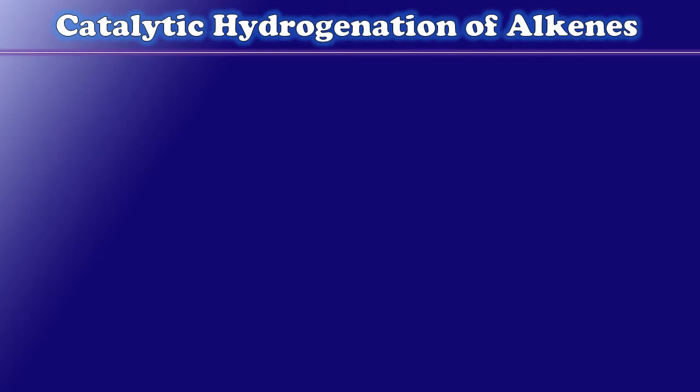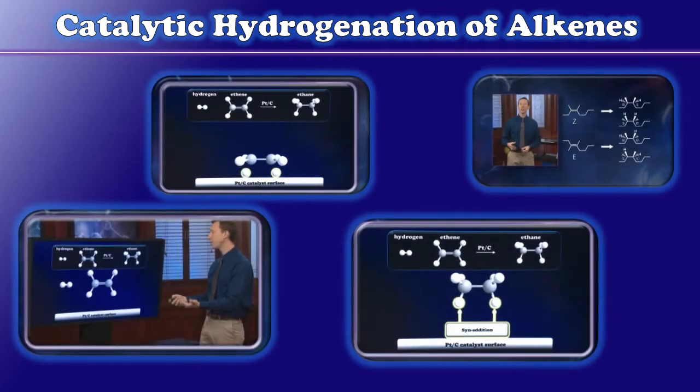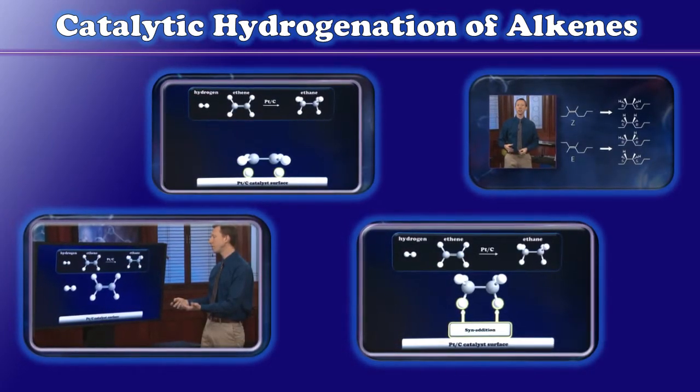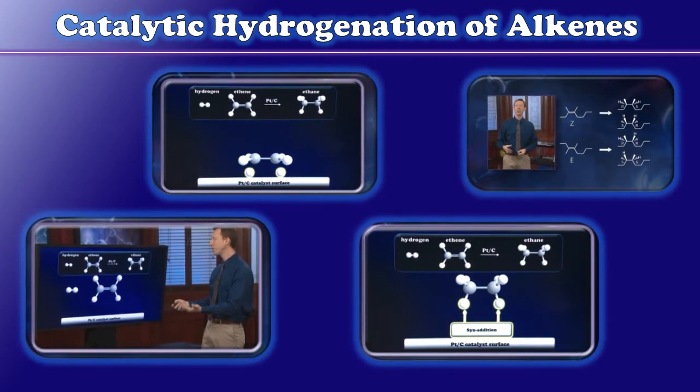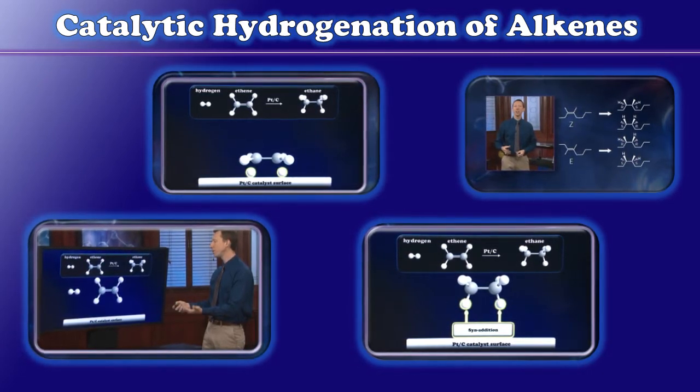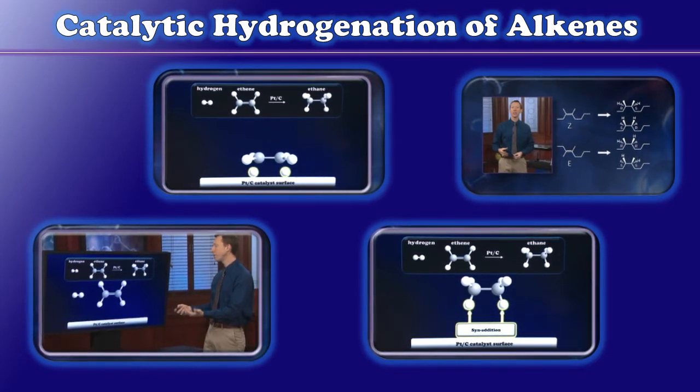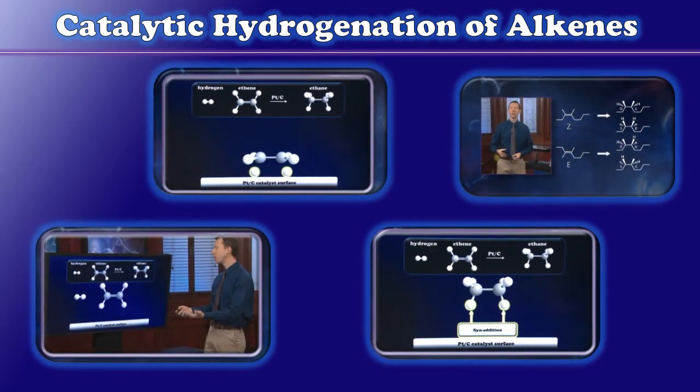This time we're going to talk about catalytic hydrogenation of alkenes and how this very important class of reactions comes with some very important considerations, especially with respect to stereochemistry and how the isomer of the alkene that we start with can have a tremendous effect on the stereochemistry of the products that are formed.